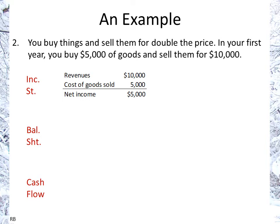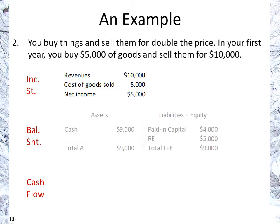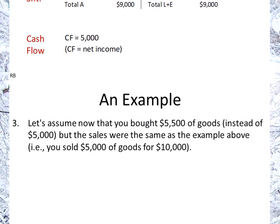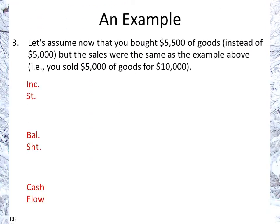We earn a net income of $5,000. As you can see, the cash flow would look the same. What would happen with the balance sheet? We would have an increase through the profit of $5,000. We would now have $5,000 more than our initial amount of $4,000, so we have $9,000 in cash. On the liabilities and equity side we also have $9,000: our initial paid-in capital and now $5,000 of retained earnings. The cash flow, as I mentioned, is the same as the net income.